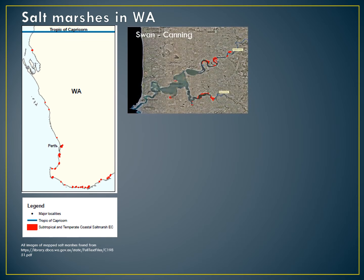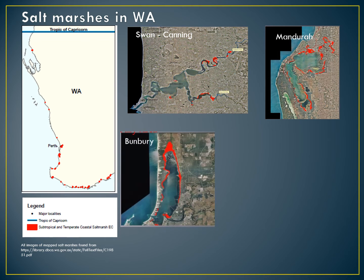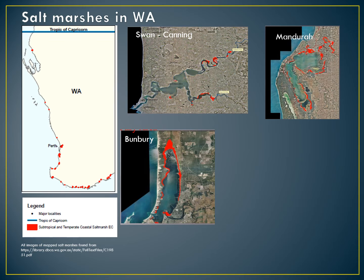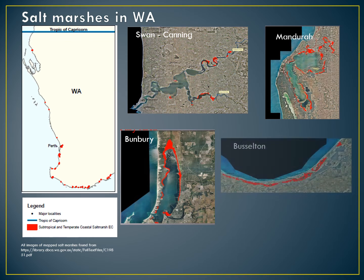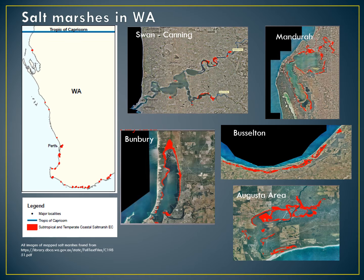Here you can see the areas along the Swan River where salt marshes are located, including the ones in the Canning River Regional Park which are subject to the tidal influences of the Canning River estuary. Also pictured are the salt marshes of the Mandurah area that are part of the Peel-Harvey estuary system. In Bunbury, the salt marshes are connected to the Leschenault Inlet, which is considered the best in the state and hosts a variety of salt marsh communities. The salt marshes stretching along the Vasse-Wonnerup area are part of the Vasse-Wonnerup wetland system, which is considered of international importance. Augusta salt marshes run along the estuaries between Augusta and Denmark.